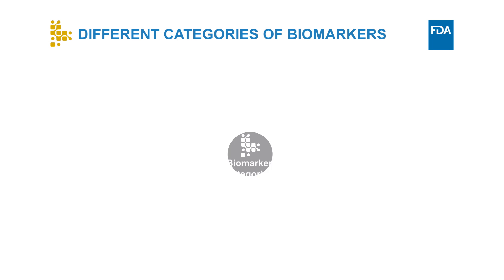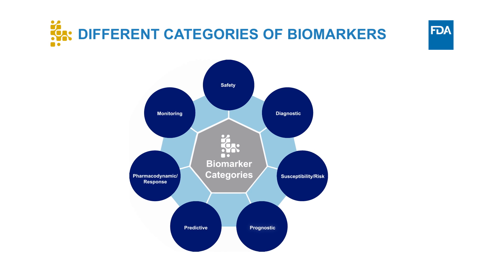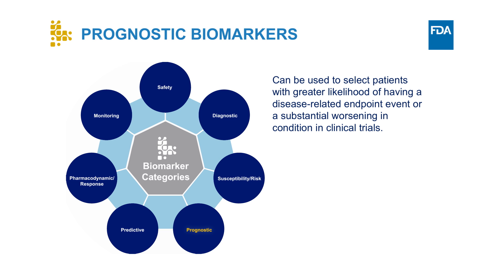Biomarkers are divided into seven categories. Each of these categories lends itself to different uses. For example, a prognostic biomarker is defined as a biomarker used to identify likelihood of a clinical event, disease recurrence, or progression. Prognostic biomarkers can be used to select patients with greater likelihood of having a disease-related endpoint event or a substantial worsening in condition in clinical trials.